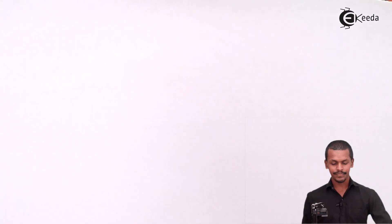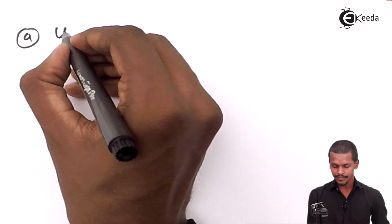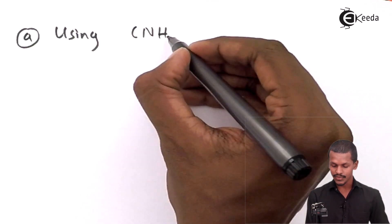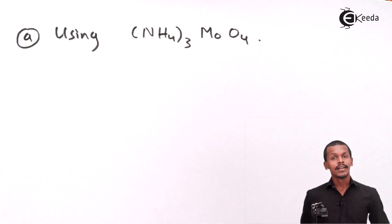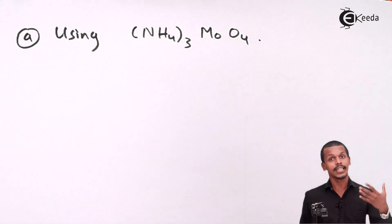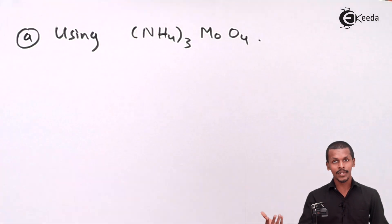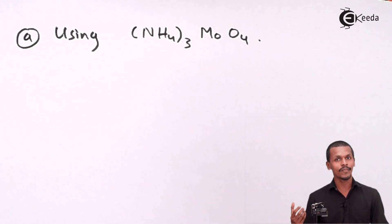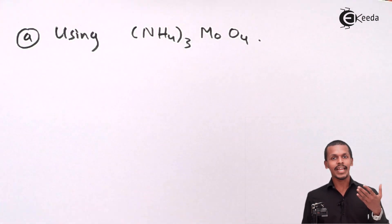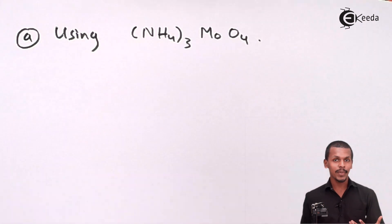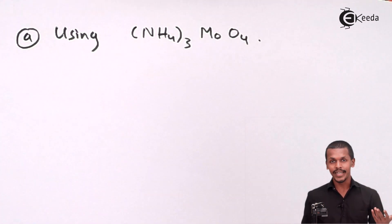Starting with the first method — using ammonium molybdate, written as (NH₄)₃. The organic compound is reacted with sodium peroxide to form sodium phosphate. That sodium phosphate is then reacted with HNO₃ to form phosphoric acid. The phosphoric acid is then reacted with ammonium molybdate along with ammonia, giving a yellow color precipitate of ammonium phosphomolybdate.